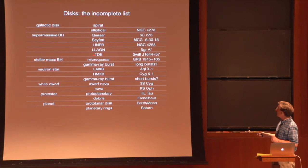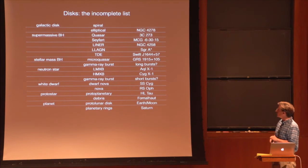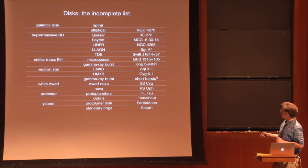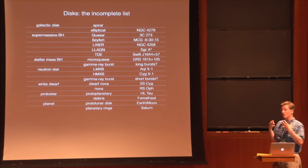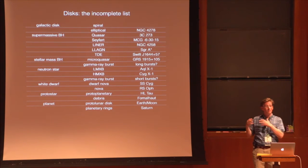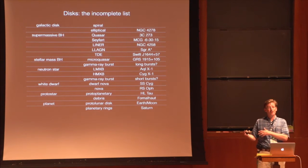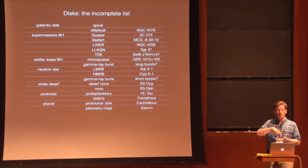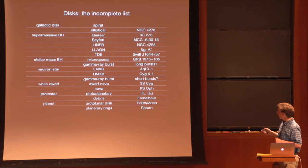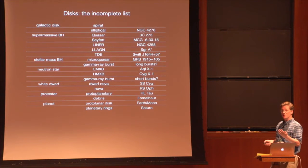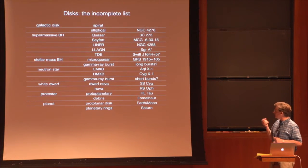There are also disks in accreting stellar mass black hole systems when there's enough gas provided to the accretion flow around the black hole that we can actually see the accreting black hole. Neutron stars in binary systems also produce luminous disks. One of the best studied disk systems is the dwarf nova system — interacting binaries with a mass-losing star that produces accretion through a disk onto a white dwarf.